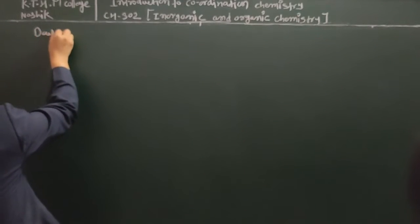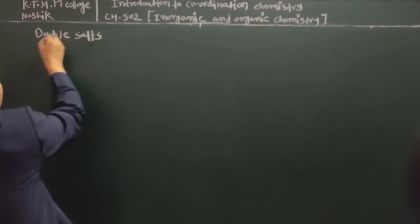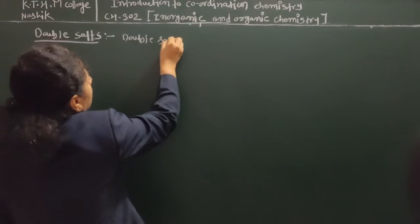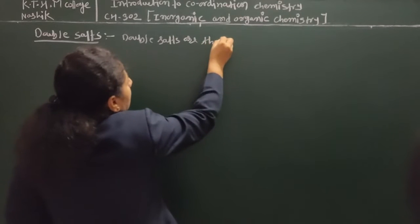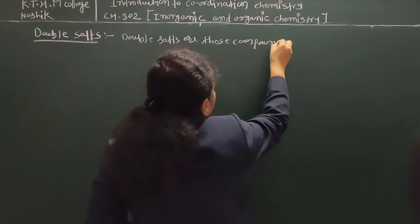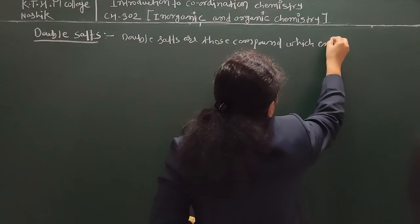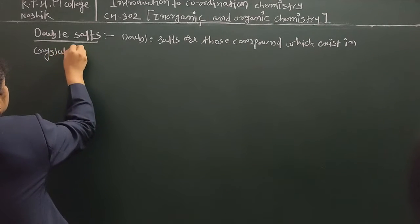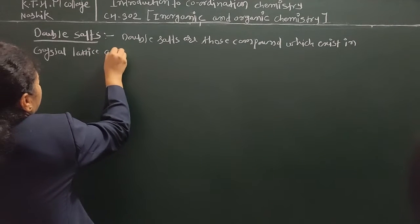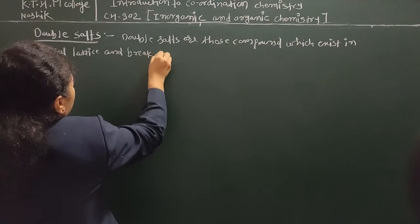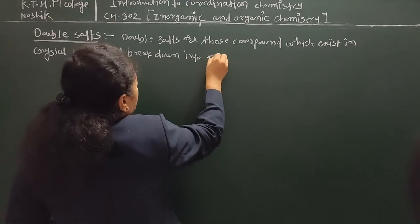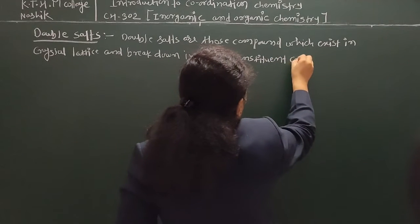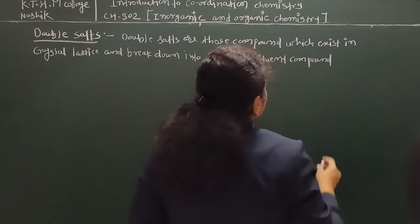The name 'double salts' itself indicates that there is a combination of two or more salts. Double salts are those compounds which exist in a crystal lattice and break down into their constituent compounds when dissolved in water or other solvents.